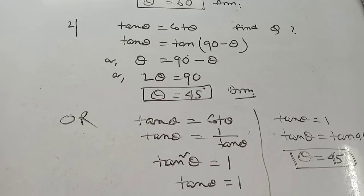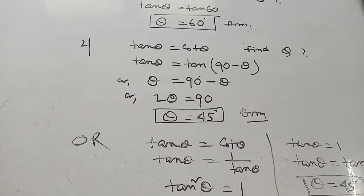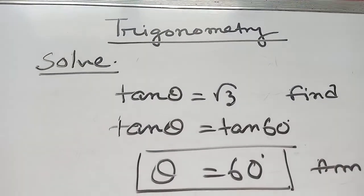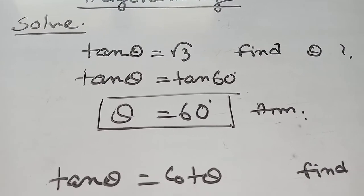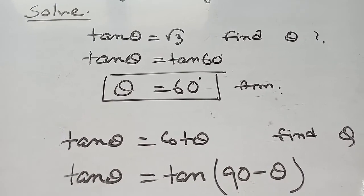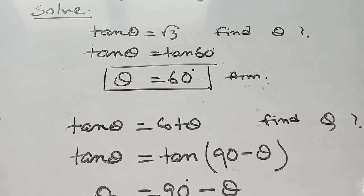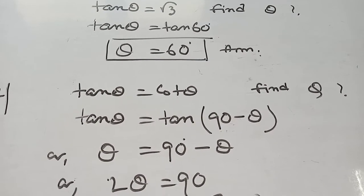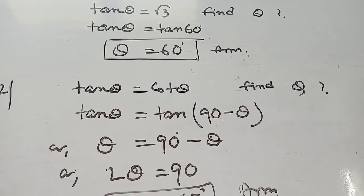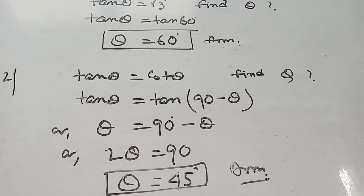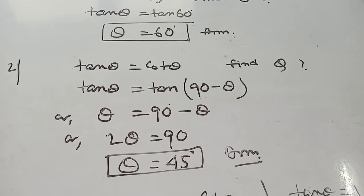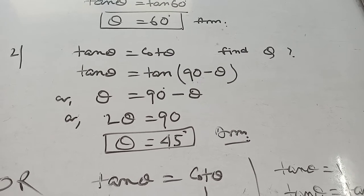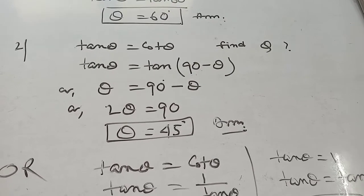This is the solve. That means solve for Theta or solve for X — this is the same type. Tan Theta equal to Root 3, find Theta. That means Tan Theta equal to Root 3, so Tan 60. Tan and Tan will be cancelled. Theta equal to 60 degree. Now Tan Theta equal to Cot Theta, find Theta. Instead of Cot, you can write Tan(90 minus Theta). Tan cancels. Theta equal to 90 minus Theta. 2 Theta equal to 90. Theta equal to 45.